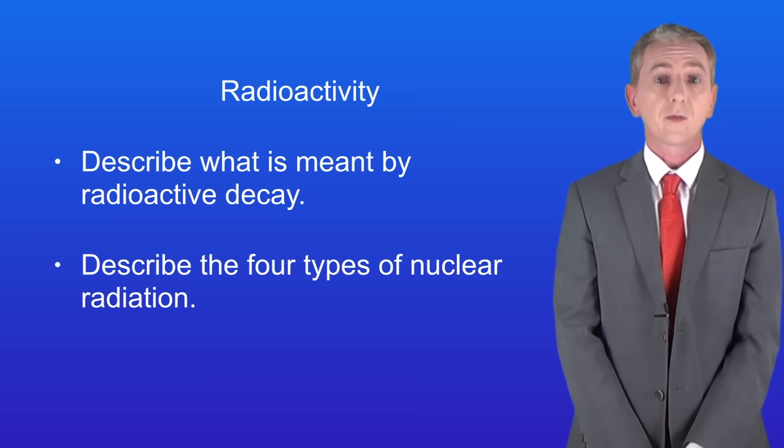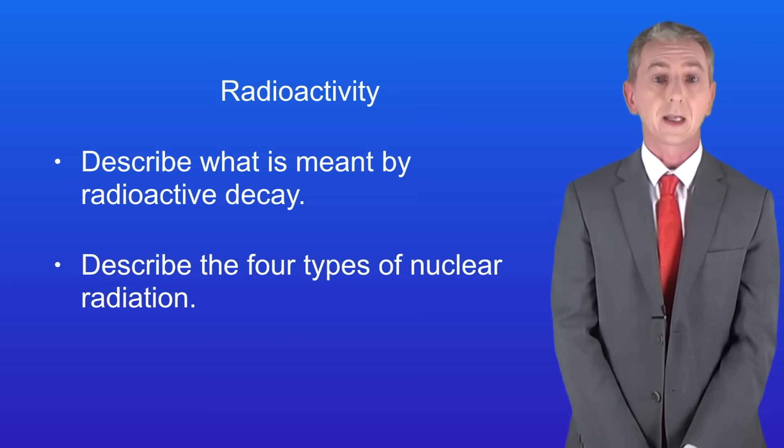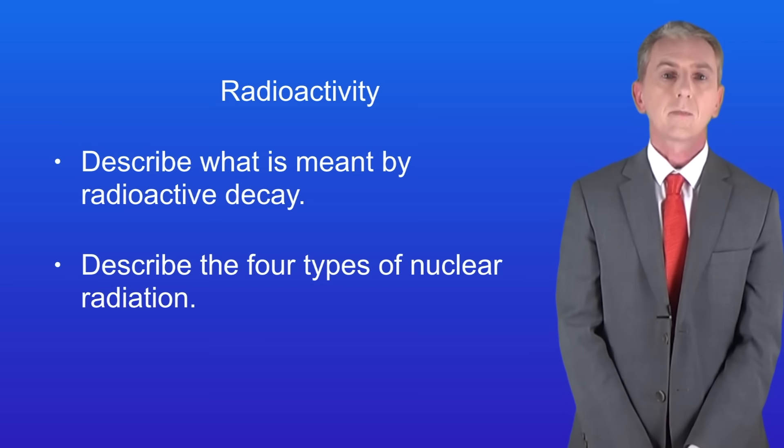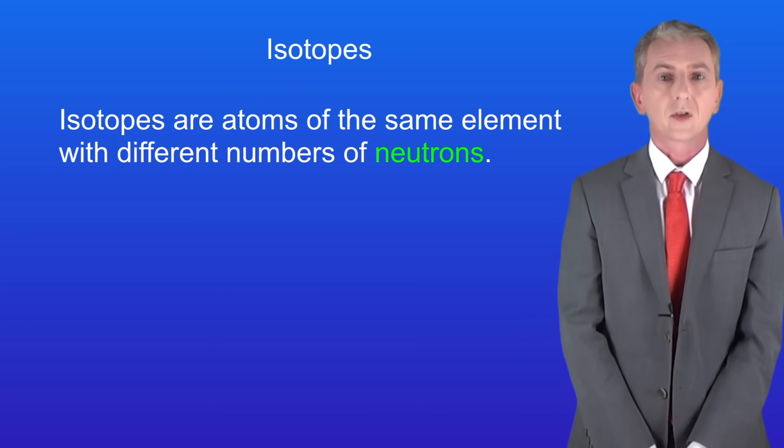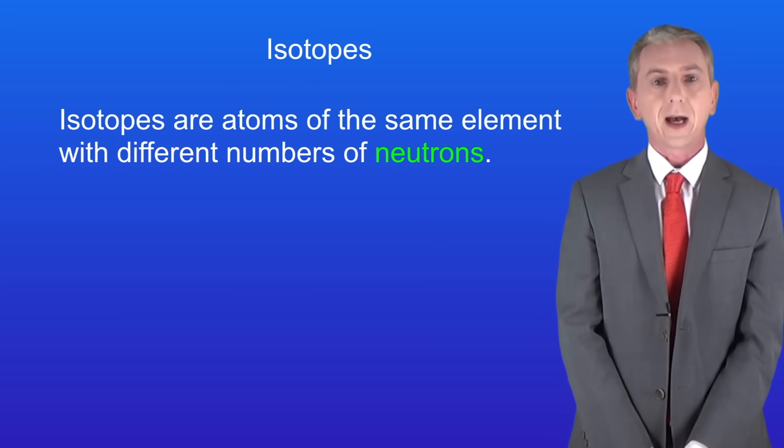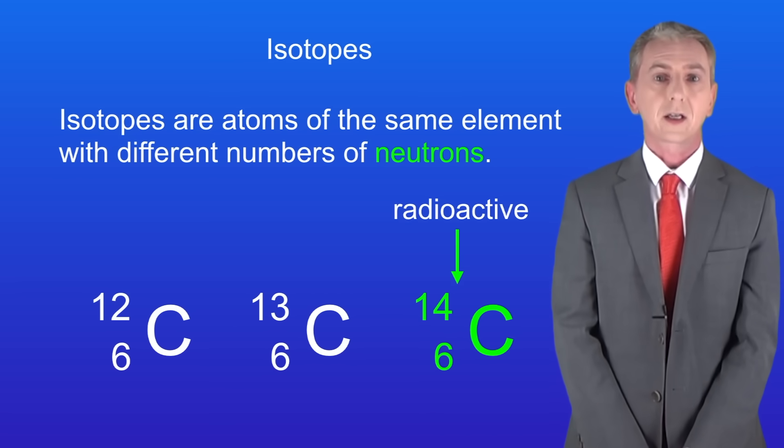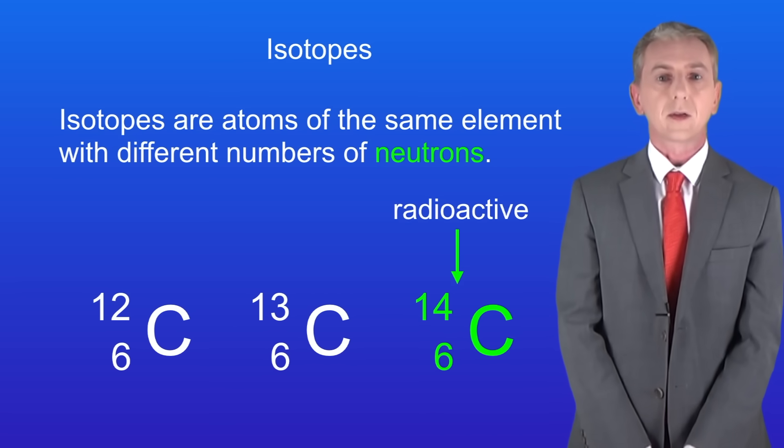I should point out that some of this material can seem a bit complicated initially but it's not as tricky as it looks so bear with it. Recently we looked at the idea of isotopes. We saw that isotopes are atoms of the same element with different numbers of neutrons. I'm showing you three isotopes of carbon here. Now carbon-14 is actually a radioactive isotope so let's look at what that means.